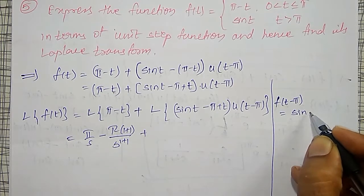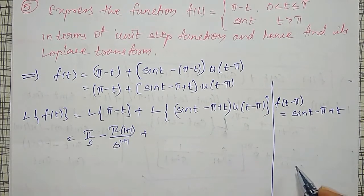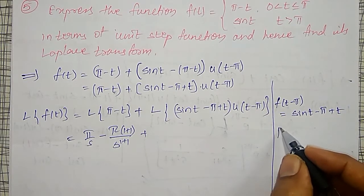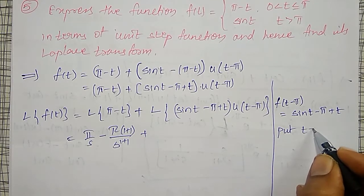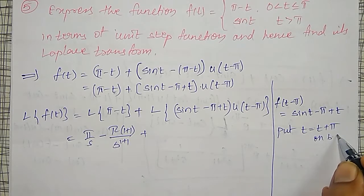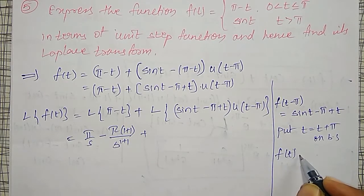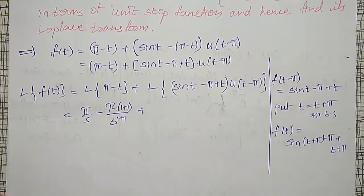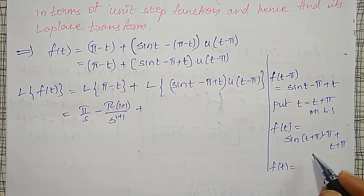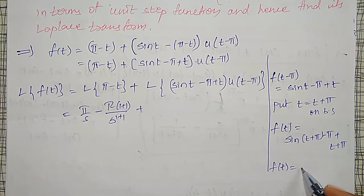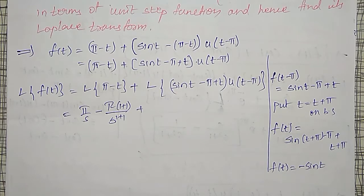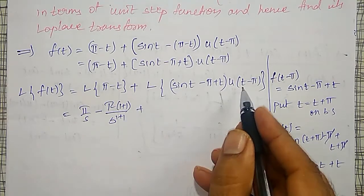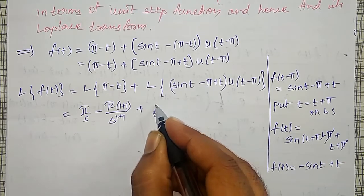Here f(t − π) = sin(t − π) + t. To get f(t), put t = t + π on both sides. Therefore f(t) = sin(t + π − π) + (t + π) = sin(t) [shifted into the third quadrant gives −sin(t)] plus (t + π − π) = t. So f(t) = −sin(t) + t.